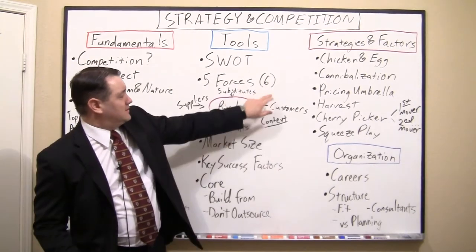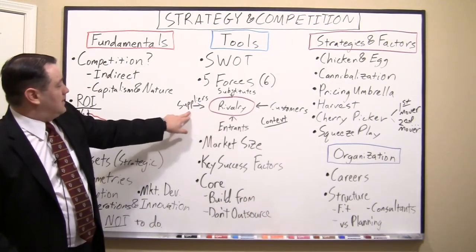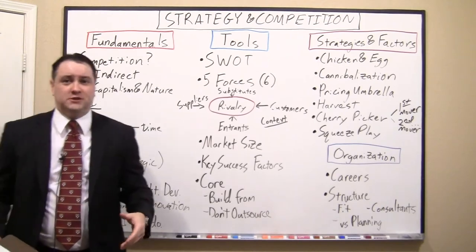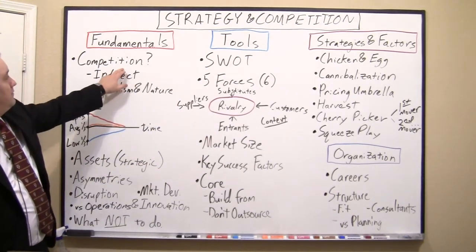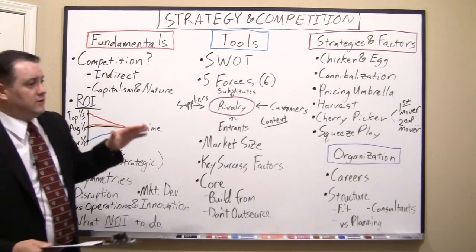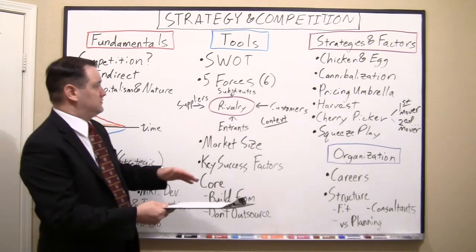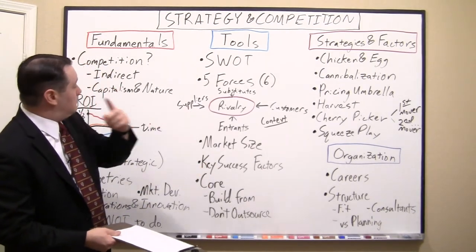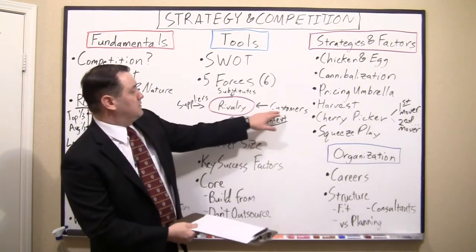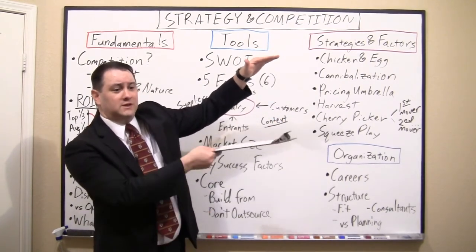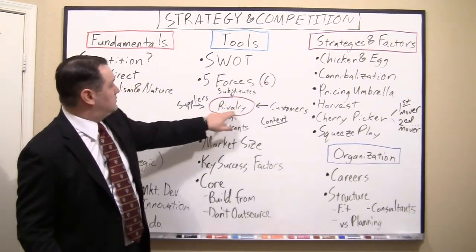Another tool is the Five Forces — I put six here because I like to throw in my own sixth force. This was developed by Michael Porter at Harvard Business School. We tend to think of competition as only with our direct competitors, but it's important to note there's really quite a bit more to it. There's a value chain — there's a willingness to pay at the customer end and costs for raw materials. Through that whole value chain, you're competing with everybody for value: with competitors for market share, with customers over price, and suppliers are trying to raise their price to you.